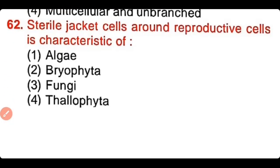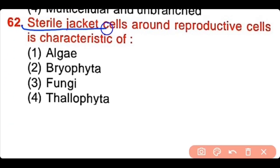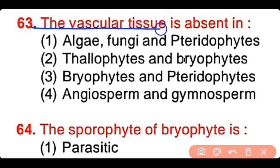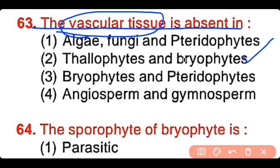Question number 62: Sterile jacket cells around the reproductive cells is a characteristic of algae, Bryophyta, fungi, or Thallophyta. The correct answer is option 2. Bryophytes have reproductive cells that are surrounded by jacket cells. Question number 63: The vascular tissue is absent in algae and fungi and pteridophytes, thallophytes and bryophytes, bryophytes and pteridophytes, or angiosperms and gymnosperms. The correct answer is option 2. Thallophytes and bryophytes have no vascular tissue.